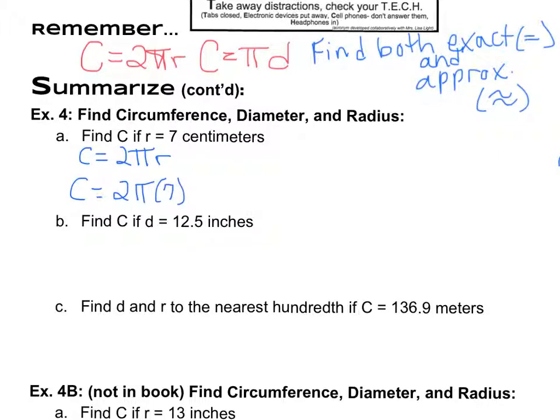My exact circumference is just 14π, and then the approximate circumference, using my π key on my calculator, is going to be 43. It did say round to the nearest hundredth, so that's what will make our pattern as we do all these problems when we're doing approximations to the nearest hundredth. 43.98, and that is centimeters for both.